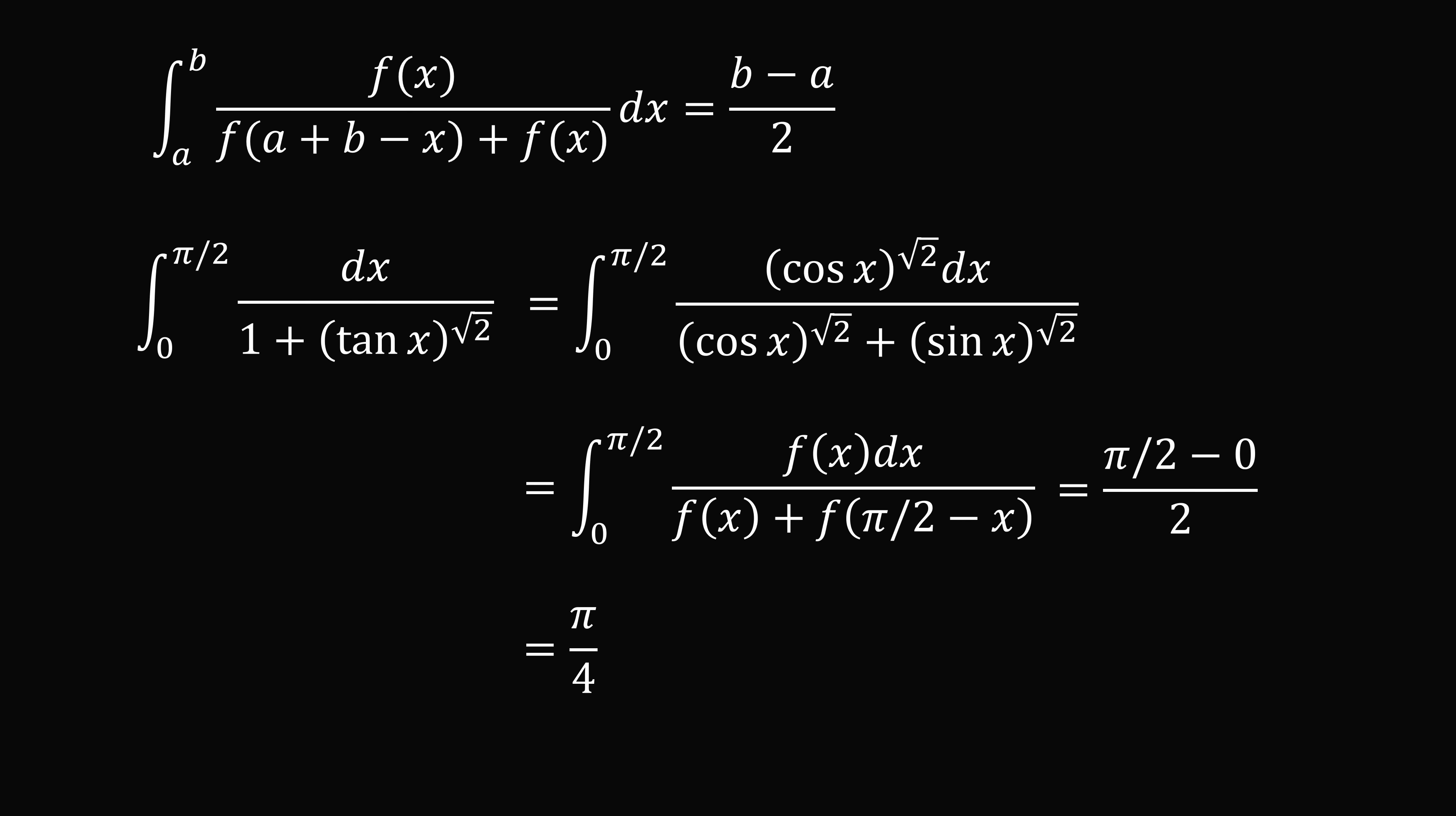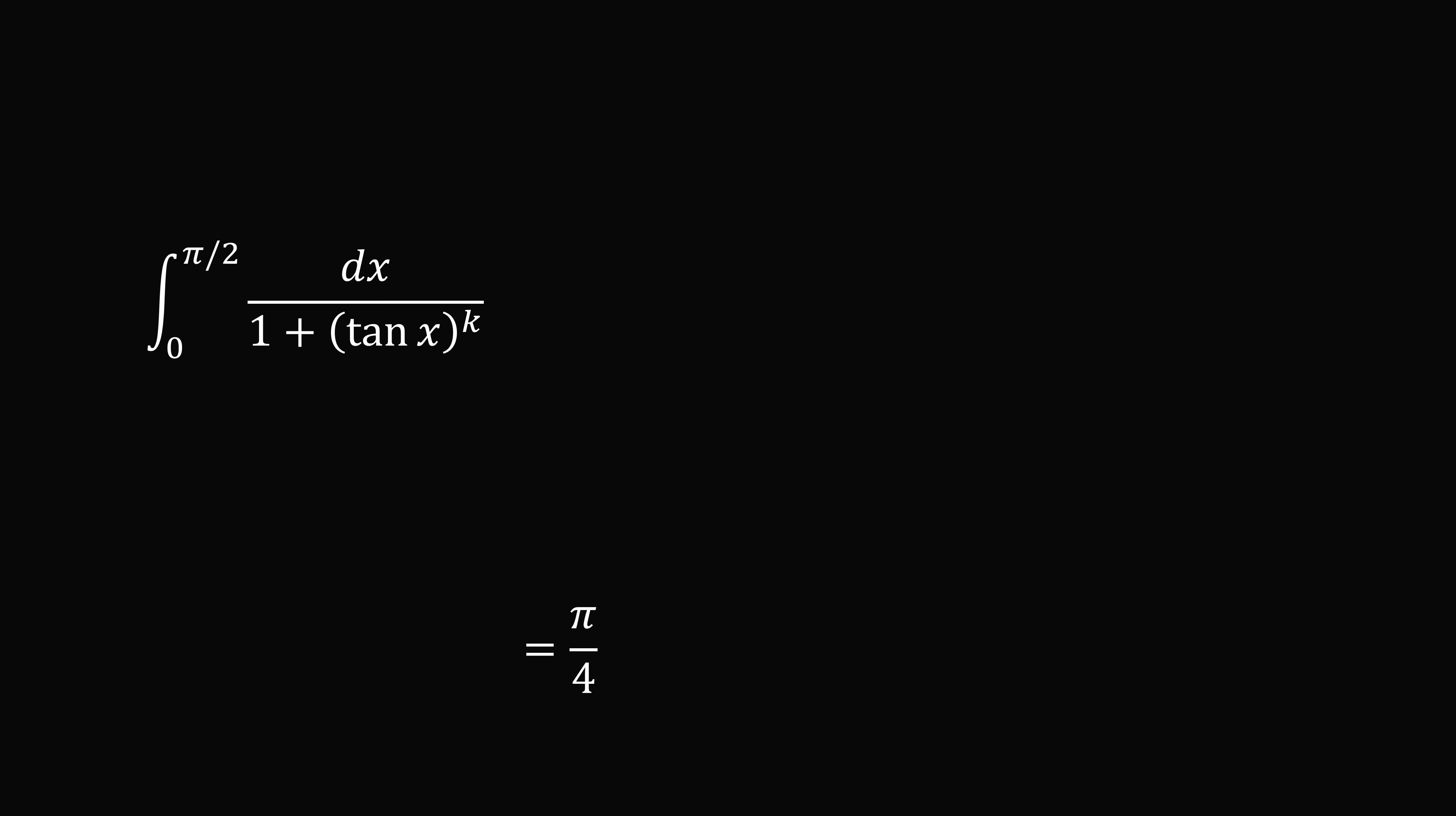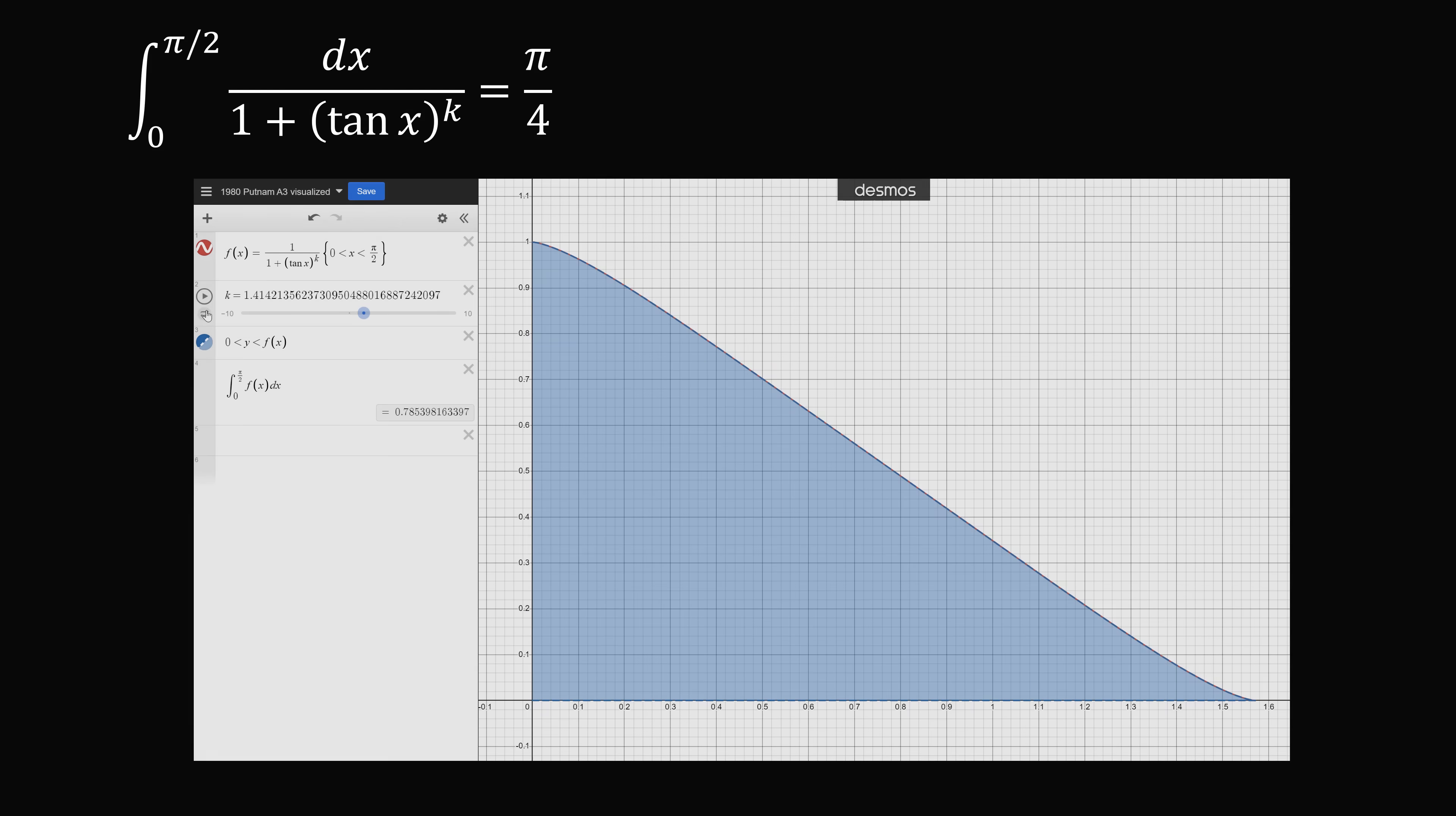We can even generalize this one step further. There's nothing special about the exponent of root 2. We can substitute this for any real number k and we're going to get exactly the same result. The integral from 0 to pi over 2 of dx divided by 1 plus tangent x to the power of k is equal to pi over 4.